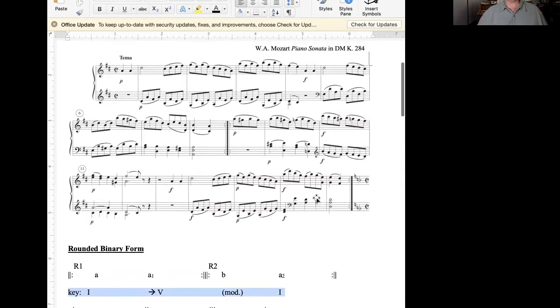Sonata form is going to share some of the features of this rounded binary form. In sonata form, the reprise one is going to be considered the part of the form that we call the exposition, and the function of this is to expose the themes on which the movement is based.